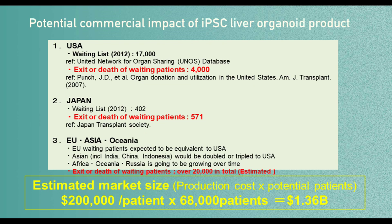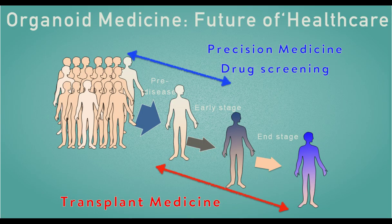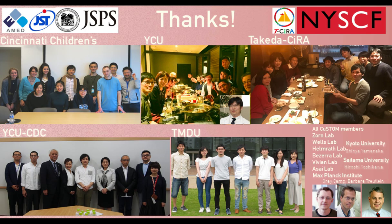In summary, in the future we envision transplanting organoids back to patients in end-stage or chronic organ failure conditions. Organoid transplantation or cell therapy products are expensive, so we need to narrow indications to patients who cannot be treated by other modalities. However, the majority of patients will benefit from precision medicine applications or drug treatment based on organoid modeling. I'd like to thank all my lab members and collaborators, and I'm happy to take questions.